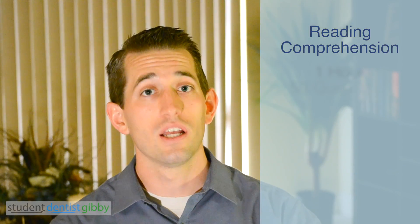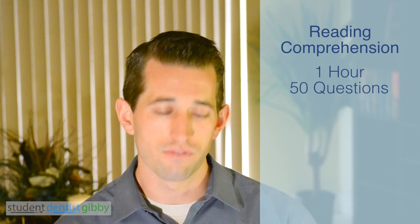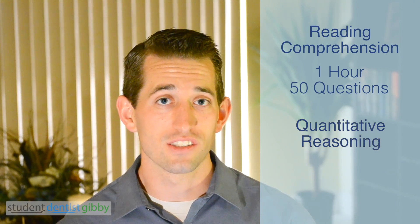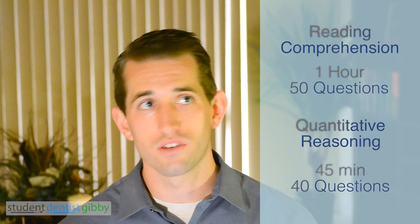Then you have a 15-minute break in the middle of your test, followed by the reading comprehension part. The reading comp part is one hour for 50 questions. You're given three passages — generally they're science-related — so that comes down to about 20 minutes per passage. The last section is the quantitative reasoning section: 45 minutes long for 40 questions. You're tested on pretty much everything you learned back in junior high and high school — algebra, geometry, trig, word problems, stuff like that.